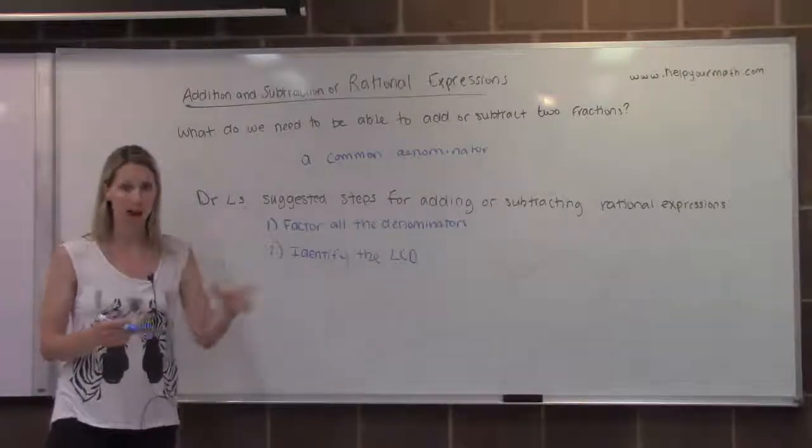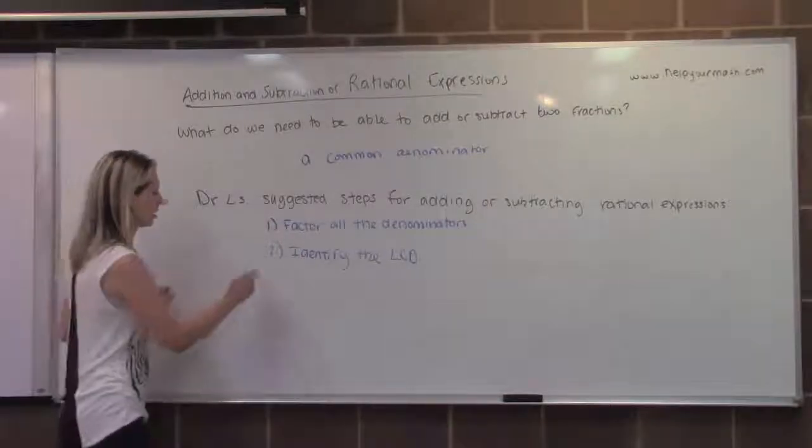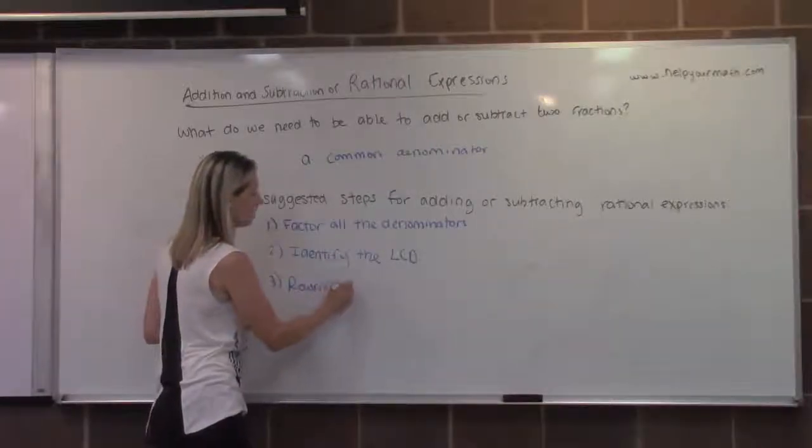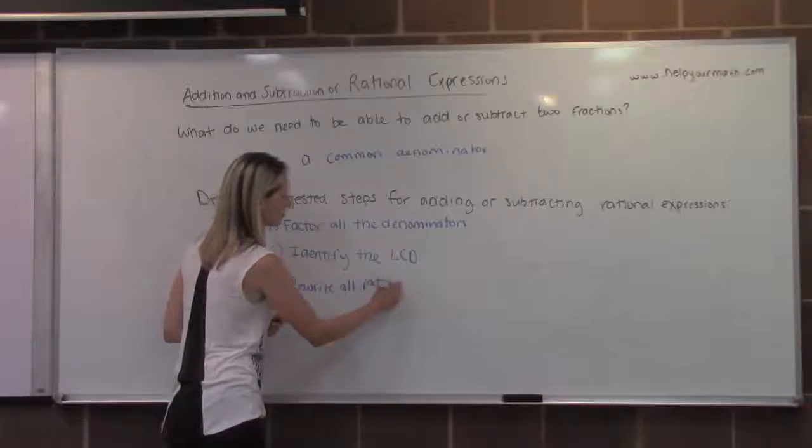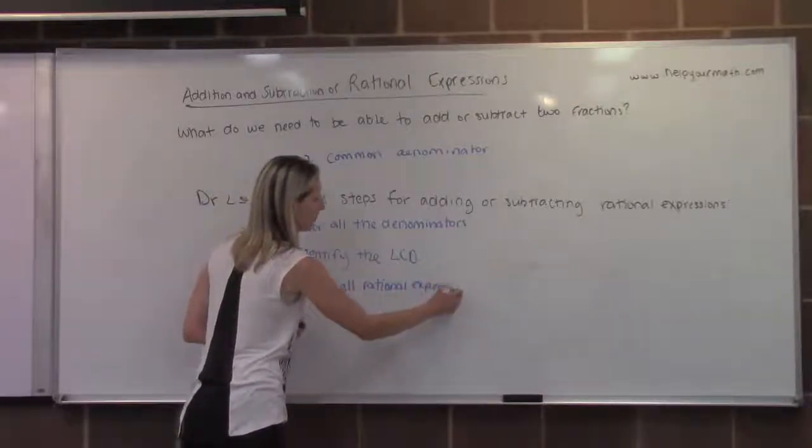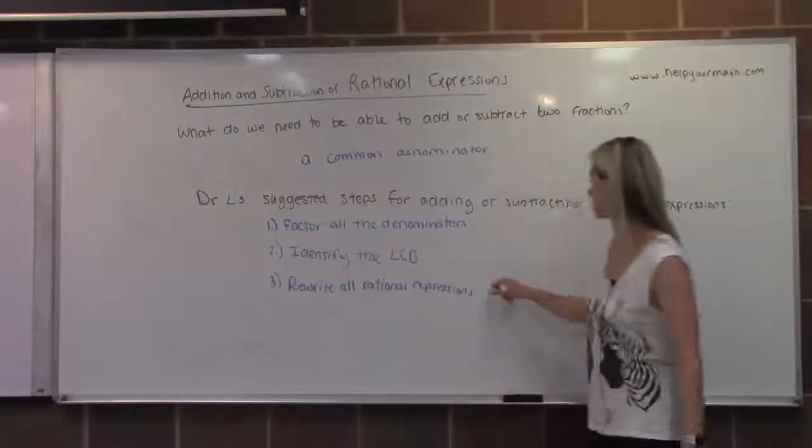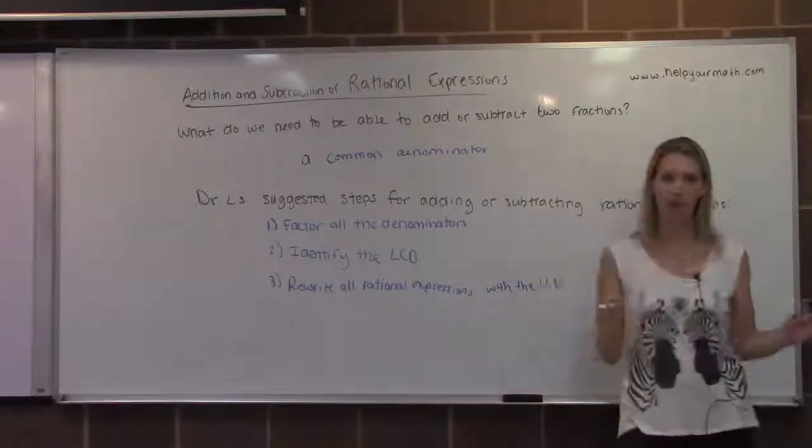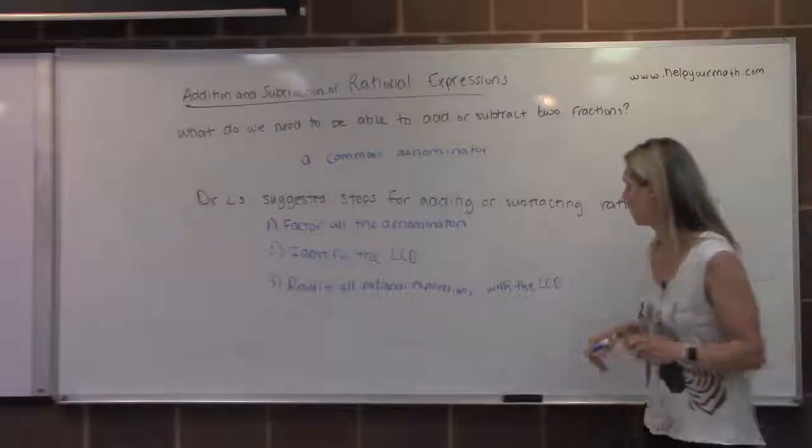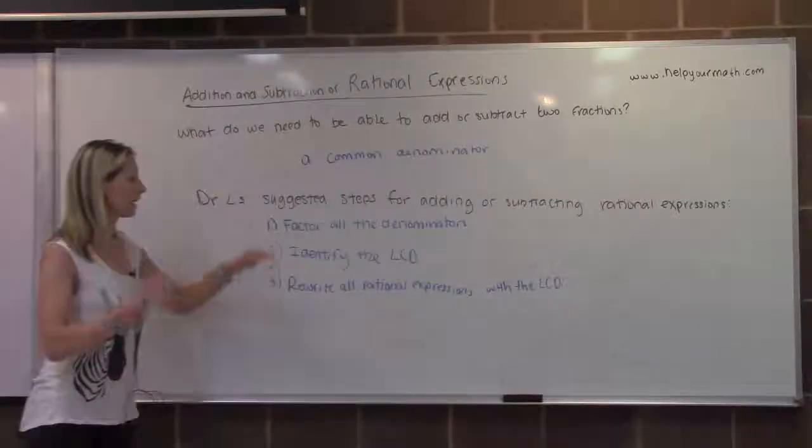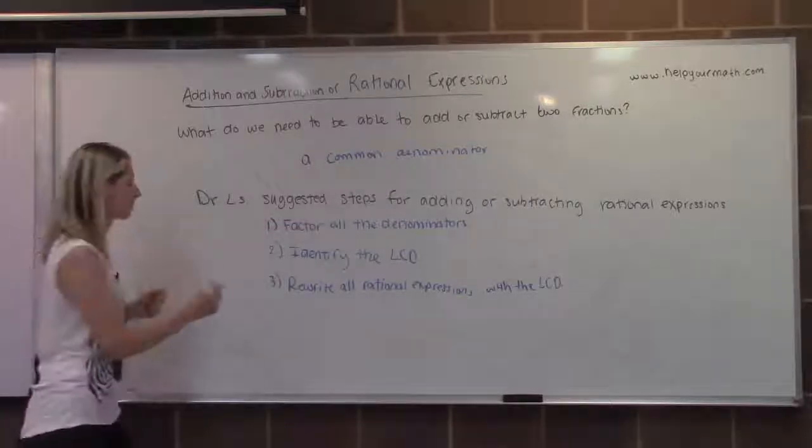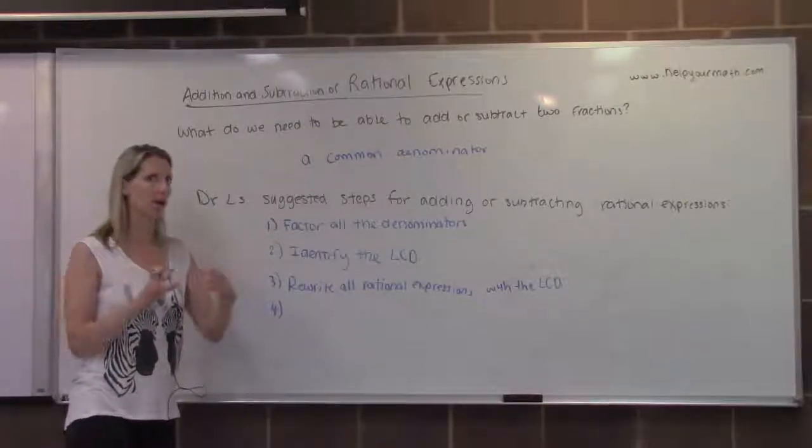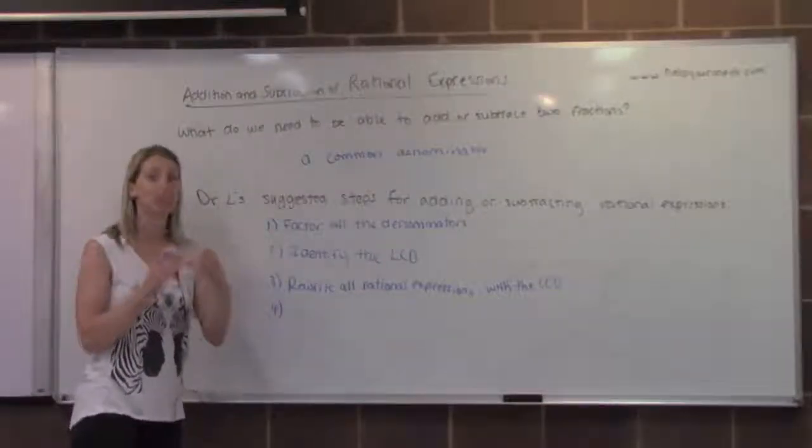Then you need each fraction to have that least common denominator. So we need to rewrite all rational expressions with the LCD. So you need to multiply the numerator and denominator by any factors that are missing. So when we do that, we multiply the missing pieces. Leave the denominators factored. You have that common denominator. They all have that common denominator. You can combine them into one. Leave the denominator factored.